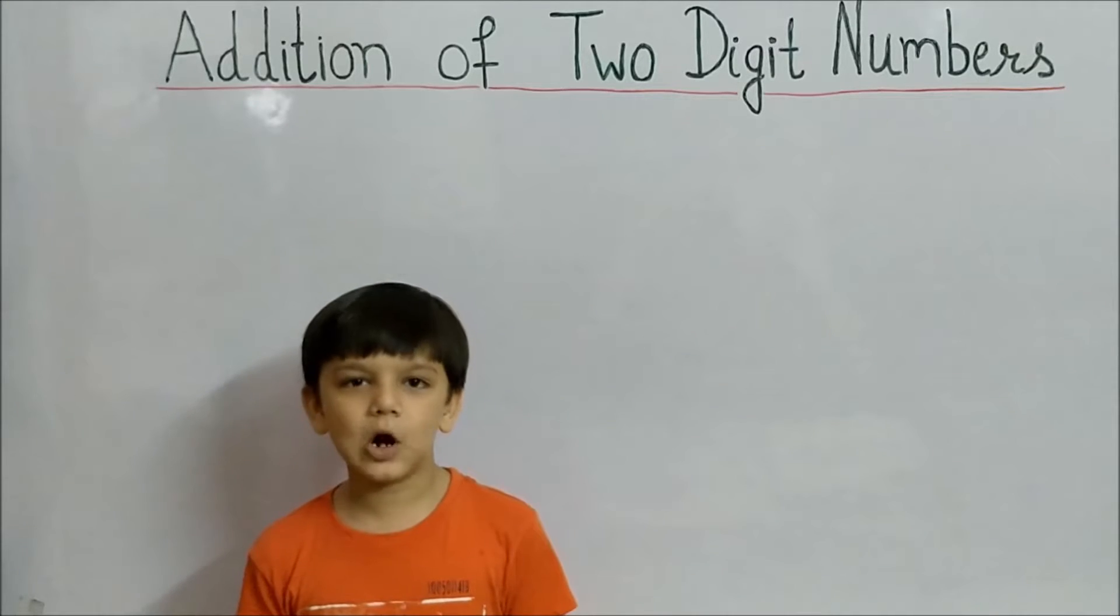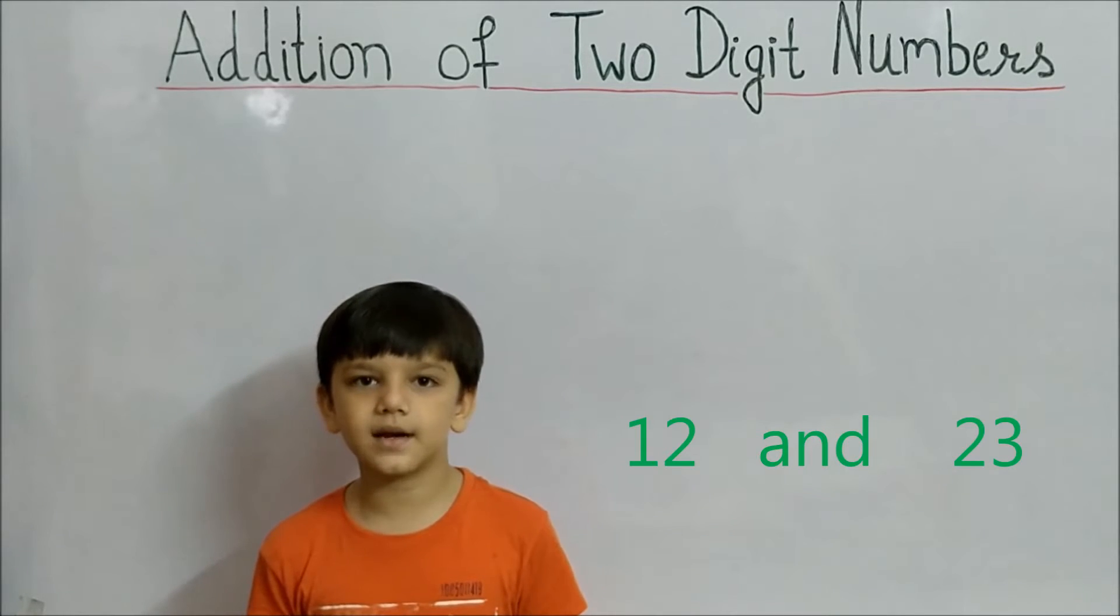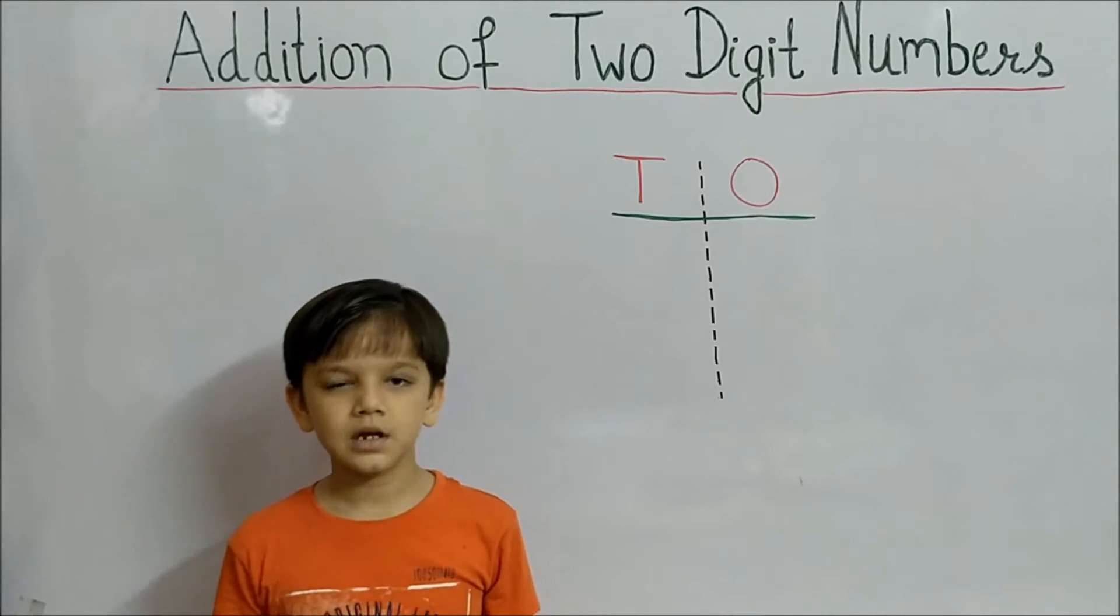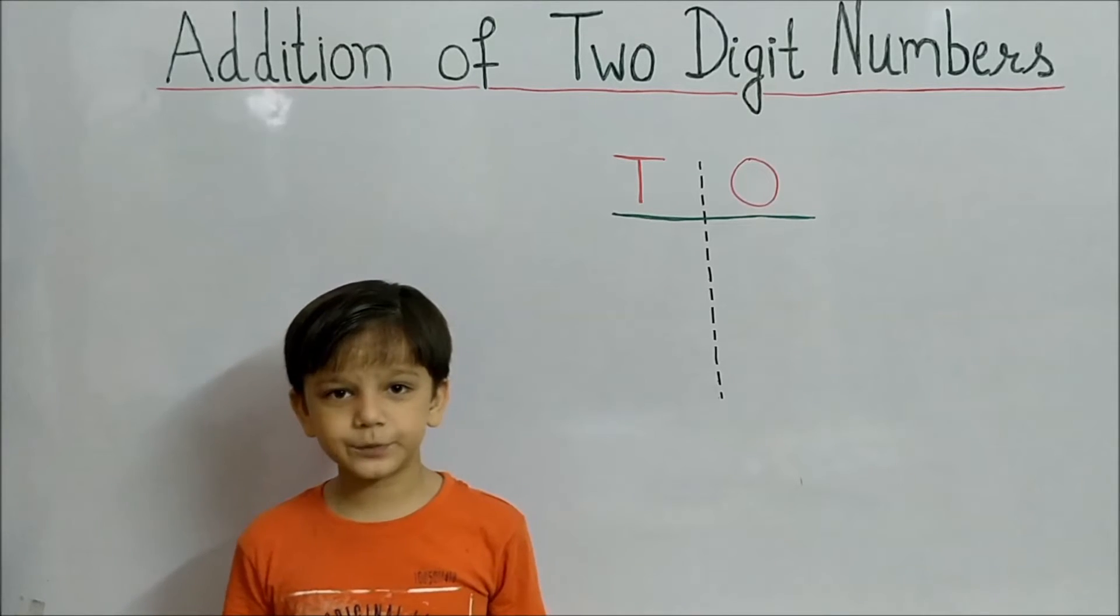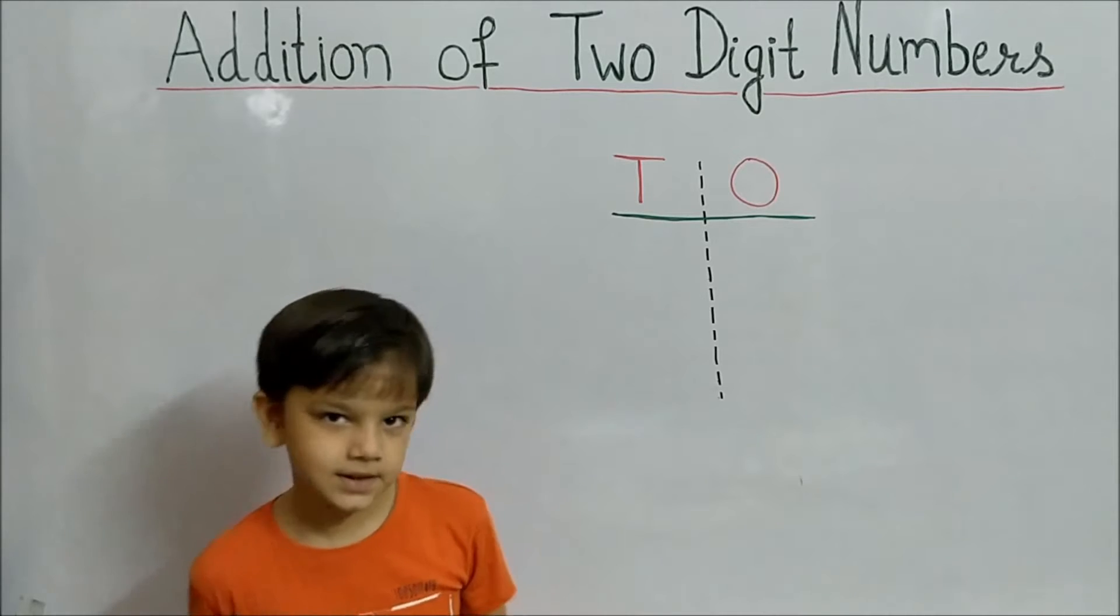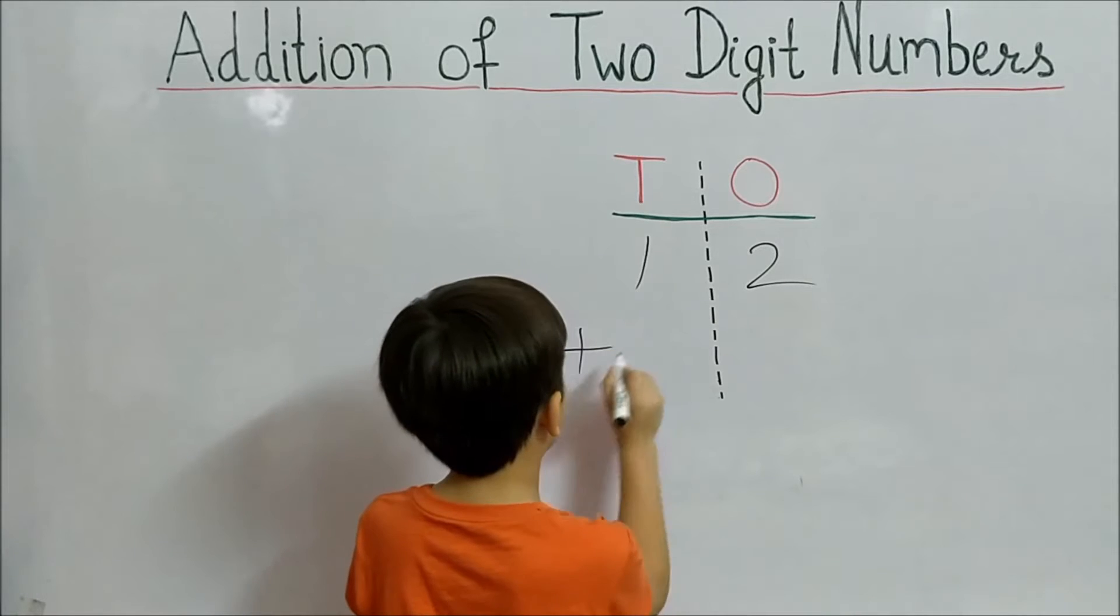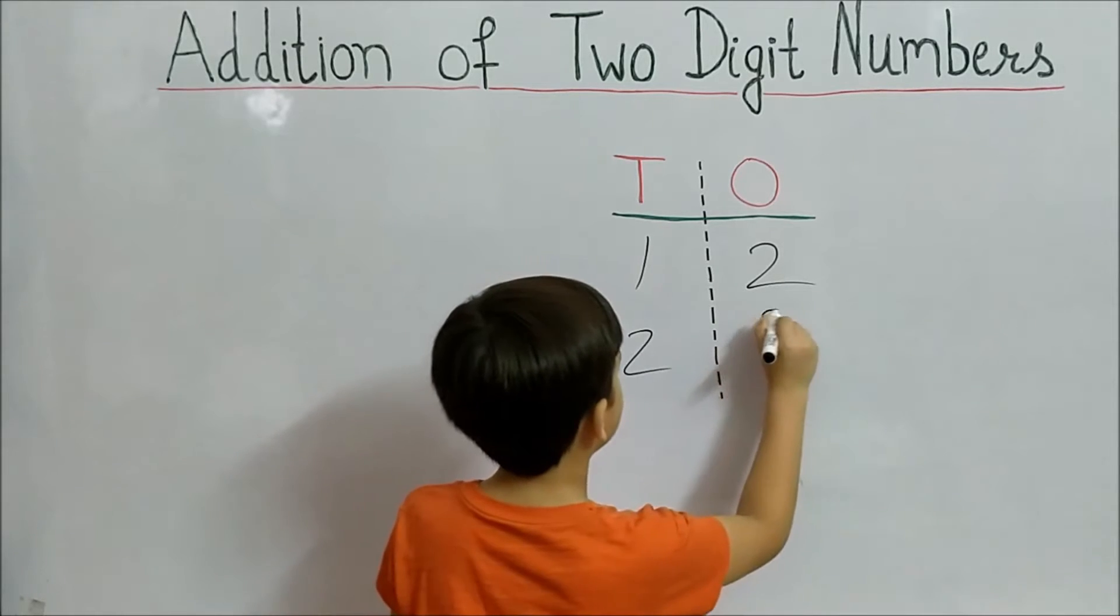Suppose we want to add 12 and 23. First of all, write ones position below ones and tens position below tens, like 12 plus 23.